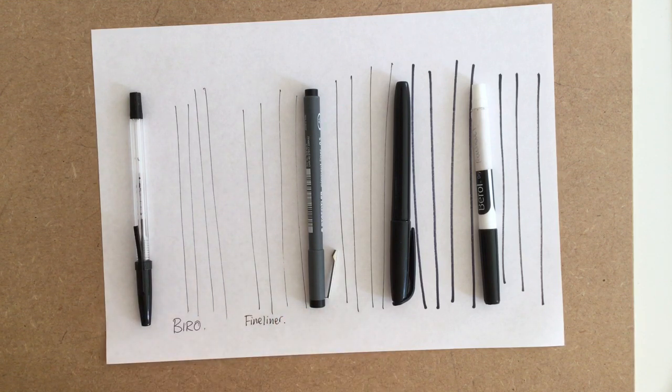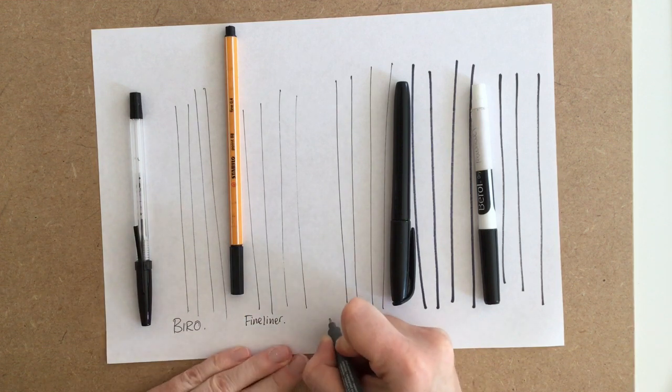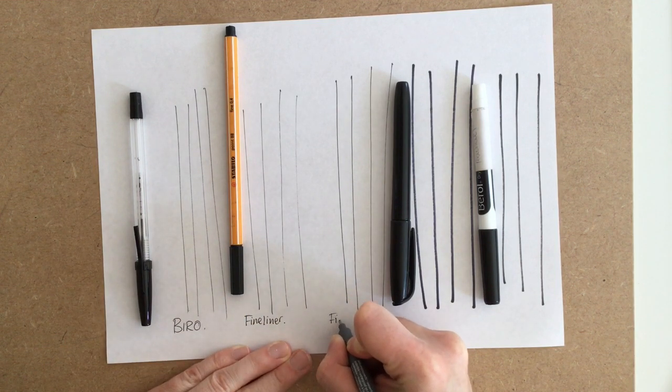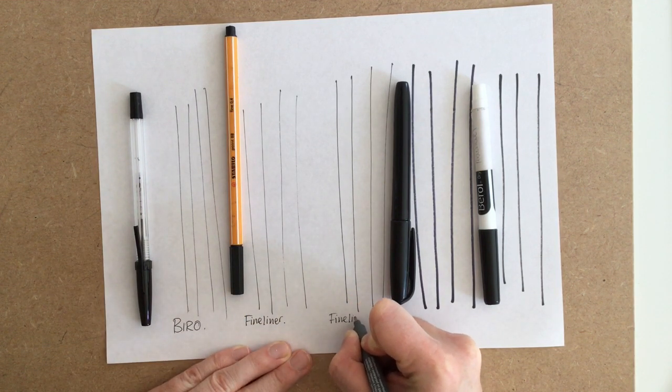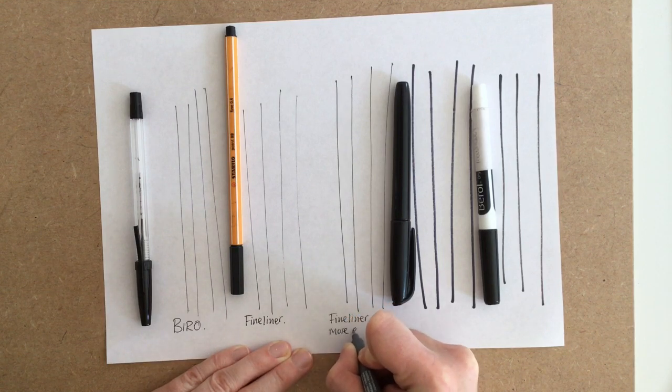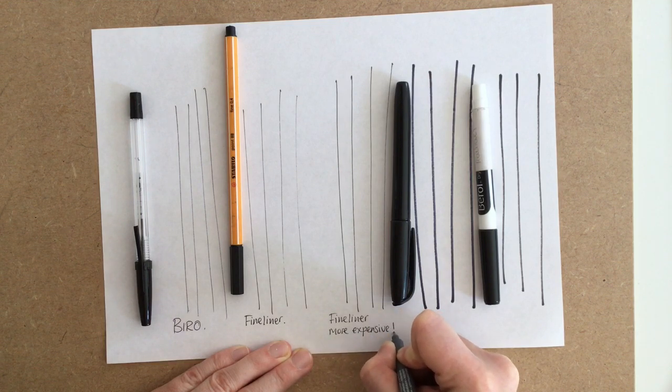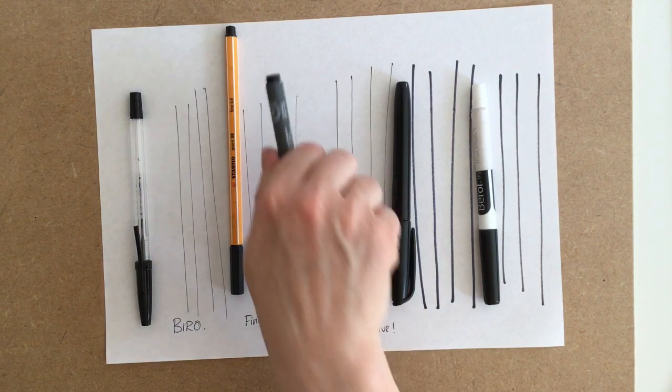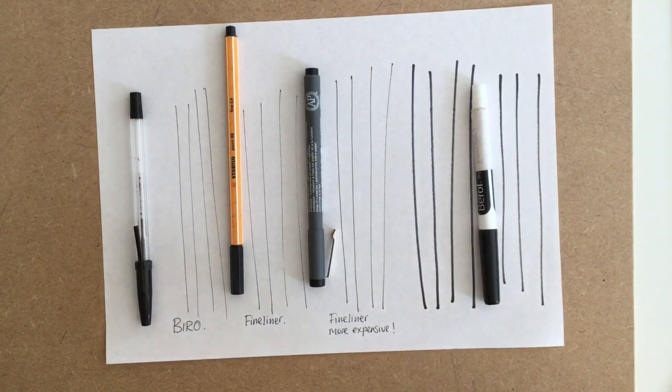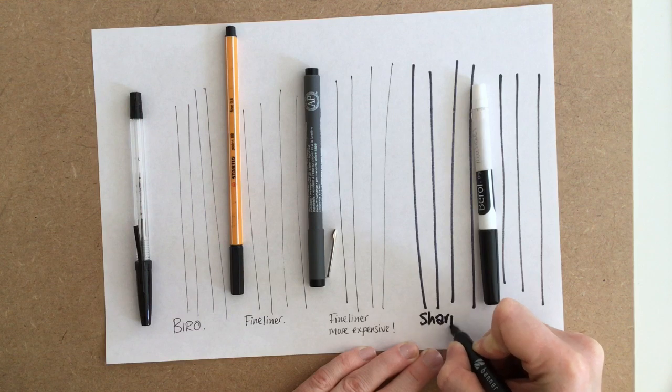I've laid out a few so that you can see the different types of lines that they make. You'll notice that the first three examples—the biro, the cheaper fineliner, and a more expensive fineliner—all make very similar marks. There's no need to go out and buy anything too expensive. The same with the thicker pens: the sharpie and the felt tip. There's really not much difference between them and they both make good marks, especially when we're just sketching quickly and roughly.